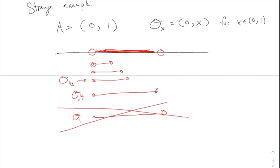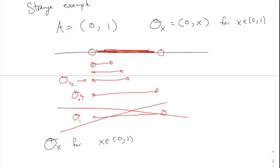Here's the question — this is why this is a strange example. Do these things actually cover the whole set even if we don't use O-1? I think they do. Even though every individual one doesn't cover the whole set, it is still true that any point in here eventually will be covered by one of these sets. You might wonder about the very last point 1, but 1 is not supposed to be part of the set anyway. Every other point eventually gets covered. So O-X for X in (0,1) is an open cover.